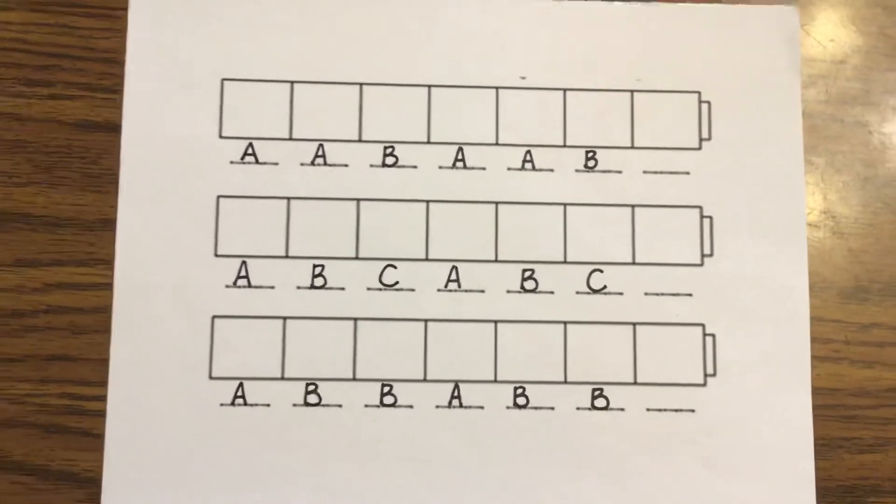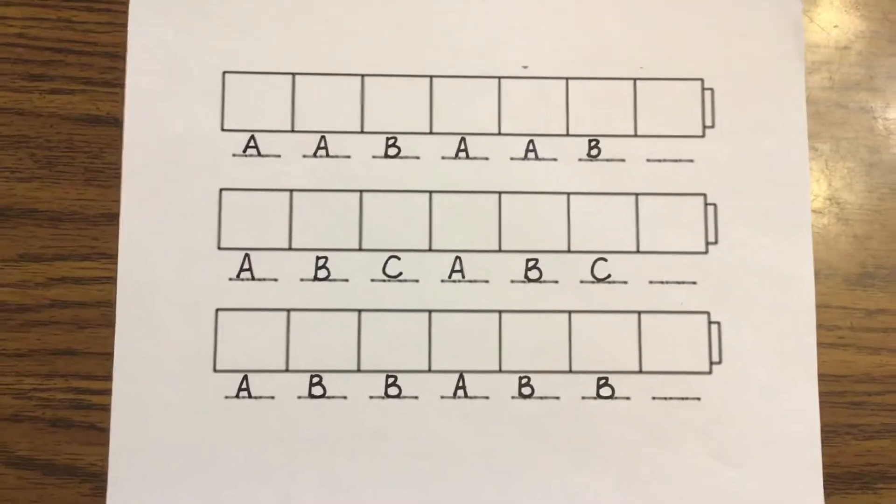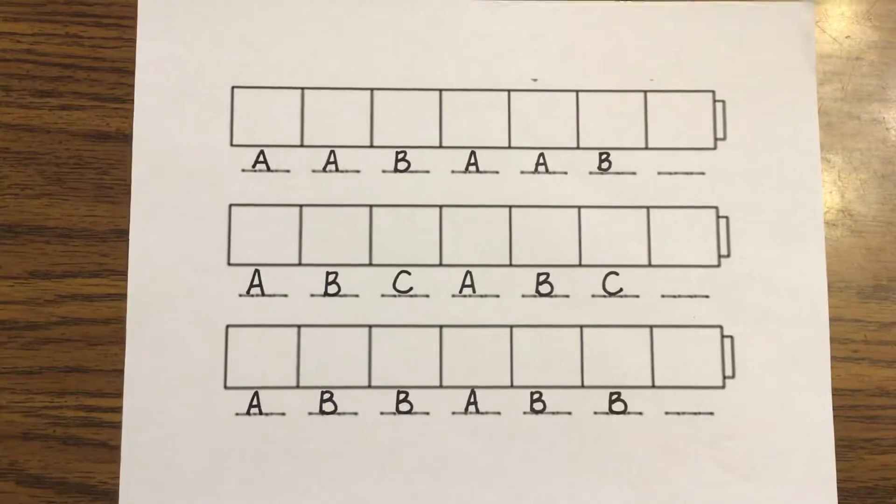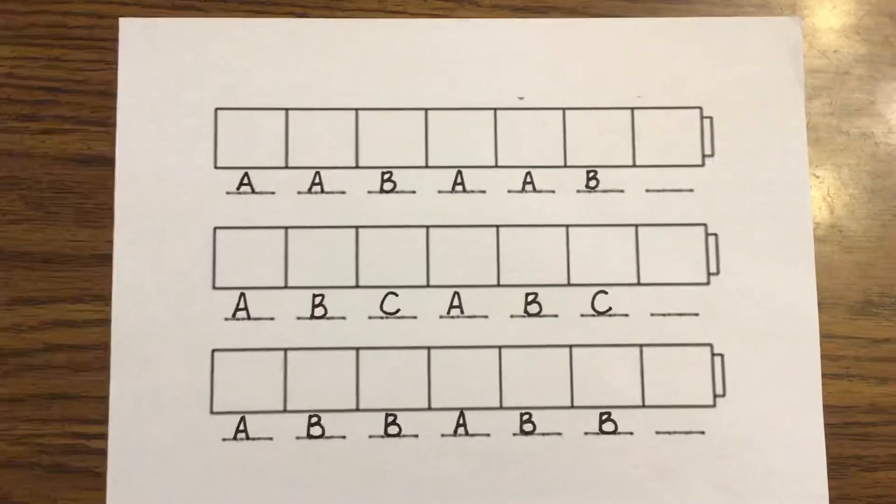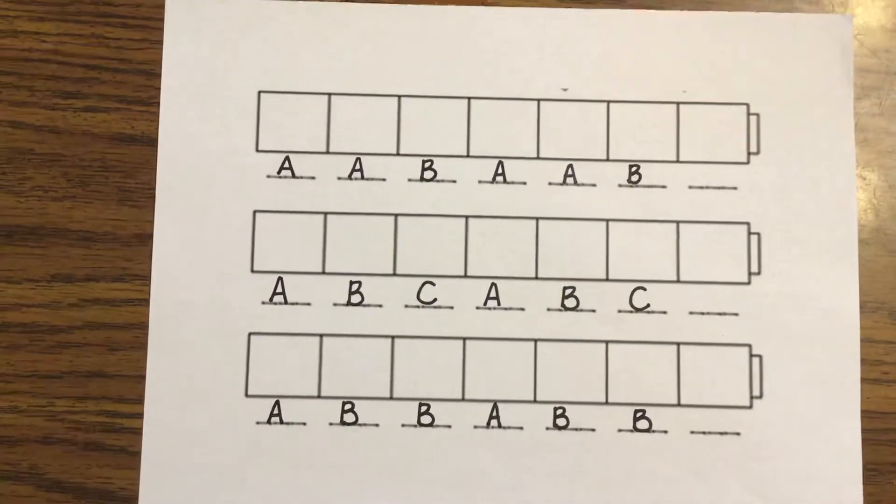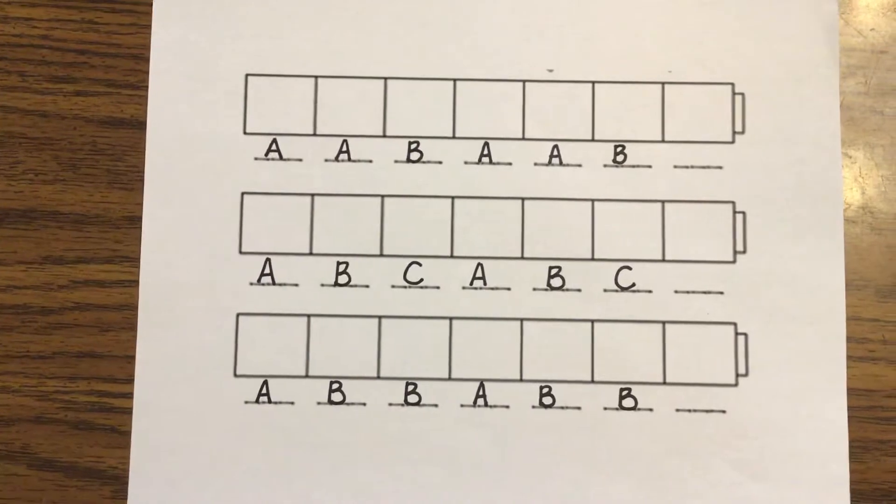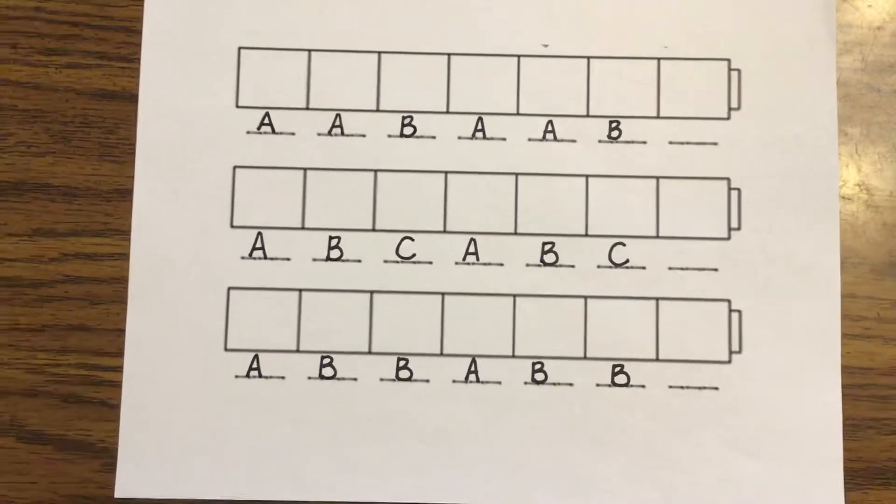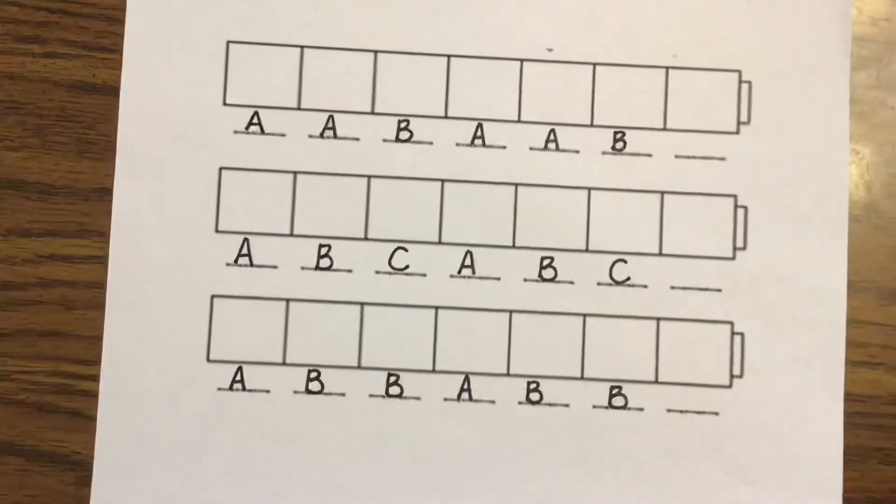So this time you don't get to choose the pattern. I'm choosing the pattern. But you get to choose what color you're going to use for that pattern. So if it's an AA, I'm going to choose what color I'm going to use for AA. AA lets me know that those two cubes have to be the same.